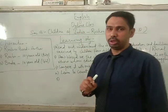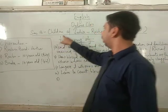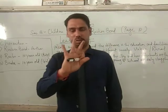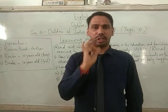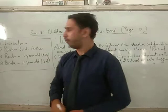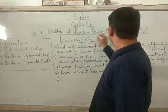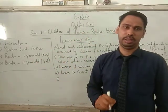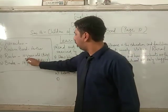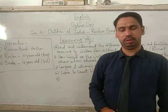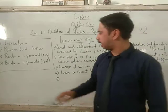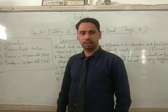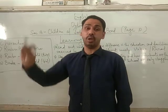As I told you, this chapter is from Unit 1, Section B: Children of India. In this story there are three main characters. The first is Ruskin Bond, the author of the story — the one who has written the story is himself present in the story. The second character is Ranbir, a 10-year-old boy. The third character is Bindra, a 14-year-old girl. They are brother and sister, and they live in a rural area.